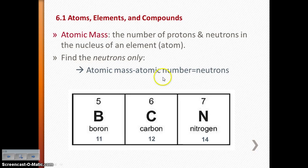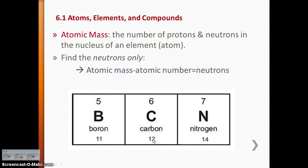Let's do carbon: atomic number 6 means 6 protons, and atomic mass 12 means 6 protons plus X neutrons equals 12 — so carbon has 6 neutrons. For nitrogen, you should be able to figure out it has 7 neutrons.